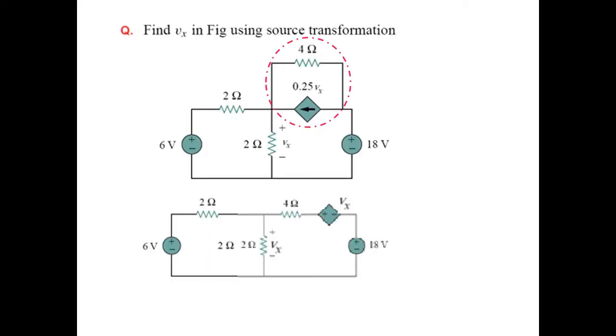Here is another circuit. We have to find Vx. If you look carefully, this dependent source and 4 ohm resistance are in parallel.